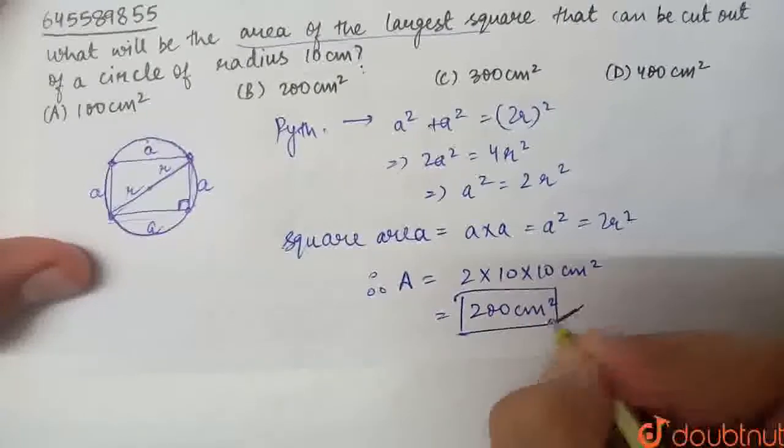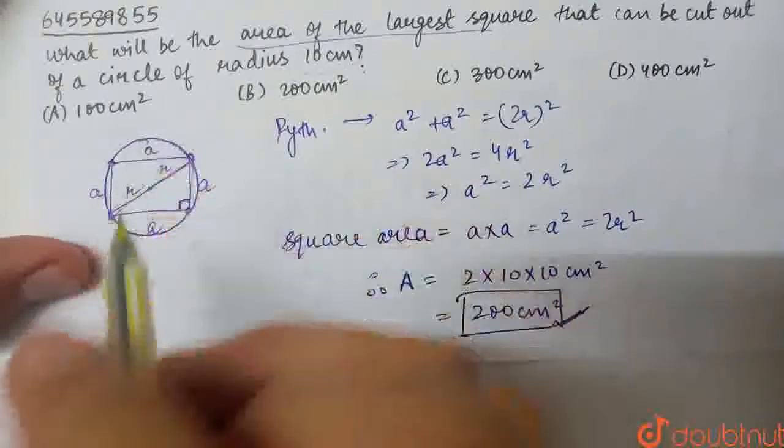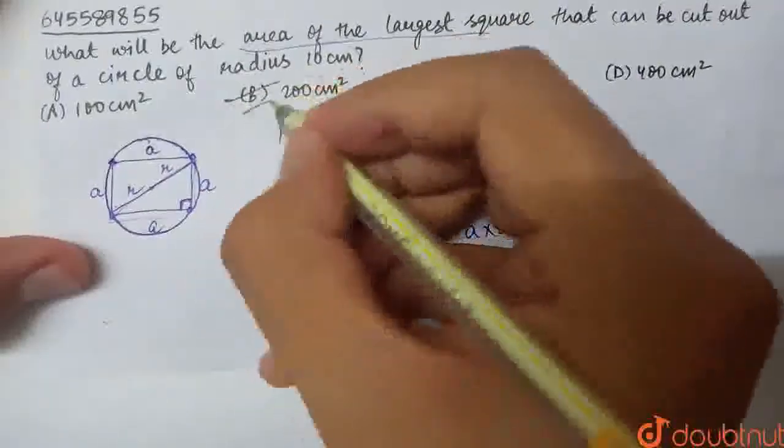So, this will be the area of the largest square that can be cut out from this circle. The answer is B part.